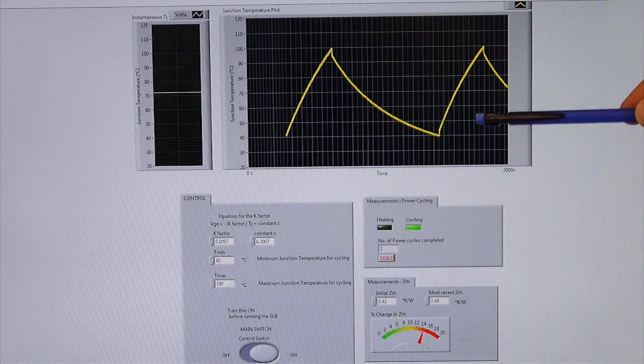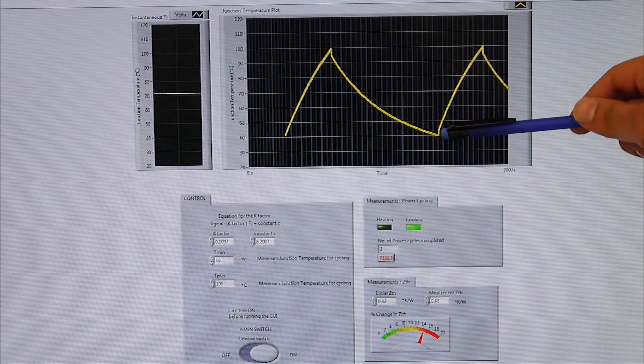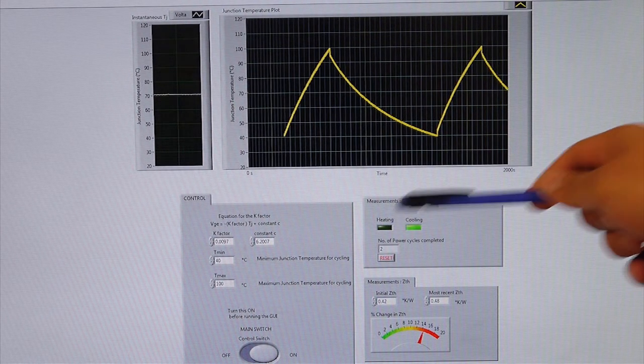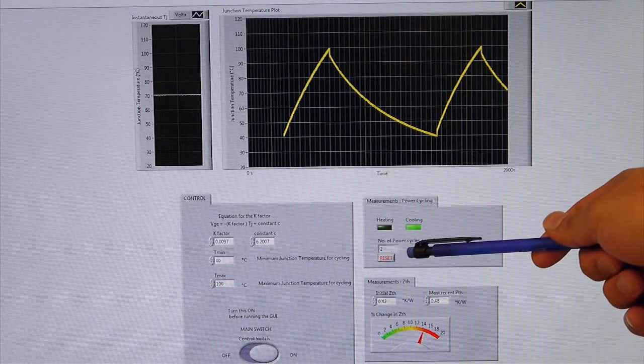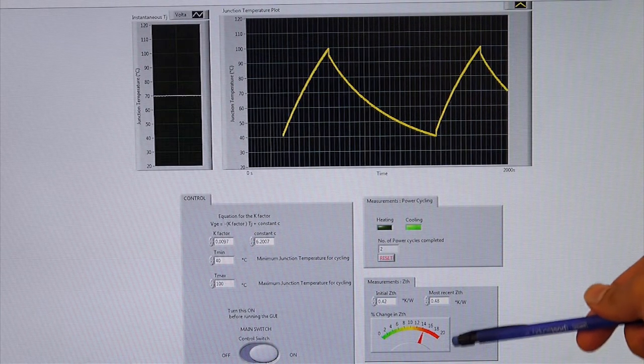The LabVIEW screen shows power cycling that is being done between temperature limits of 40C to 100C. The LabVIEW screen also shows whether the device is heating or cooling and the number of power cycles completed. This is the indicator which shows the percentage change in the ZTH.